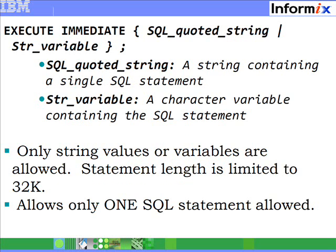EXECUTE IMMEDIATE can take either a string variable or a quoted string literal. Currently, it supports a maximum statement length of 32K. It also allows only one SQL statement per EXECUTE IMMEDIATE call — you cannot pass multiple SQL statements separated by semicolons to EXECUTE IMMEDIATE.